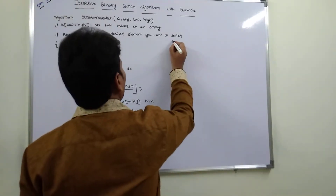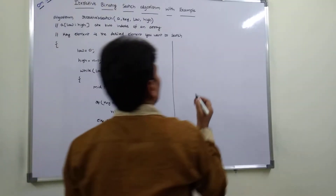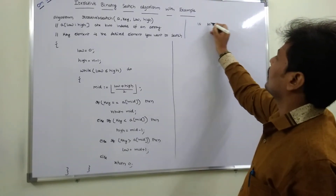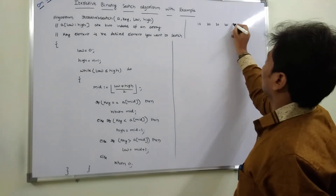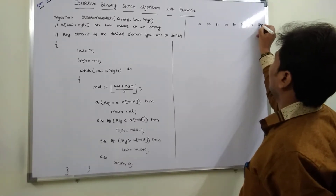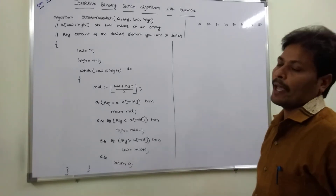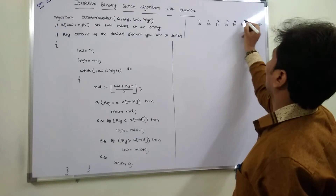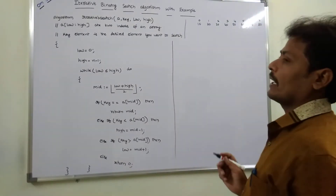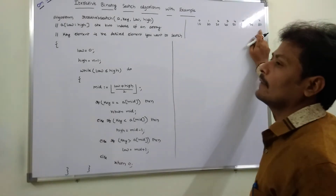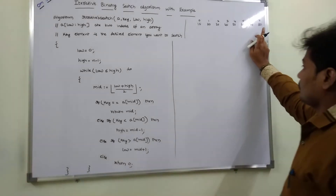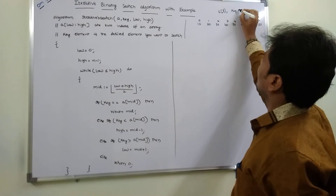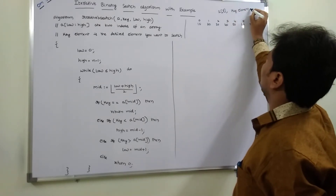Now consider an example. We take the array: 10, 20, 30, 40, 50, 60, 70, 80. There are 8 elements with indexes 0 through 7 — starting at 0 and ending at n minus 1, that is 7. This is A[8]. Our key element is 60.